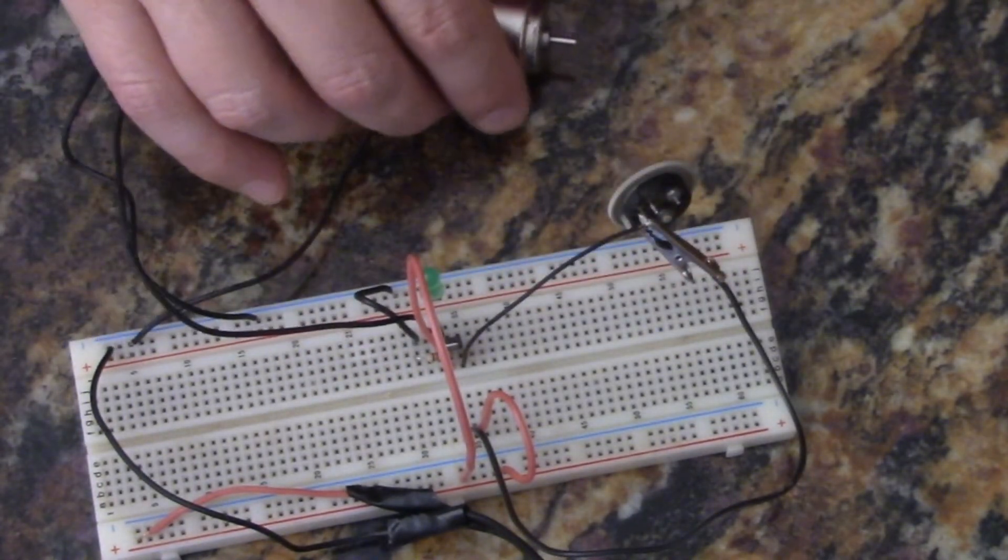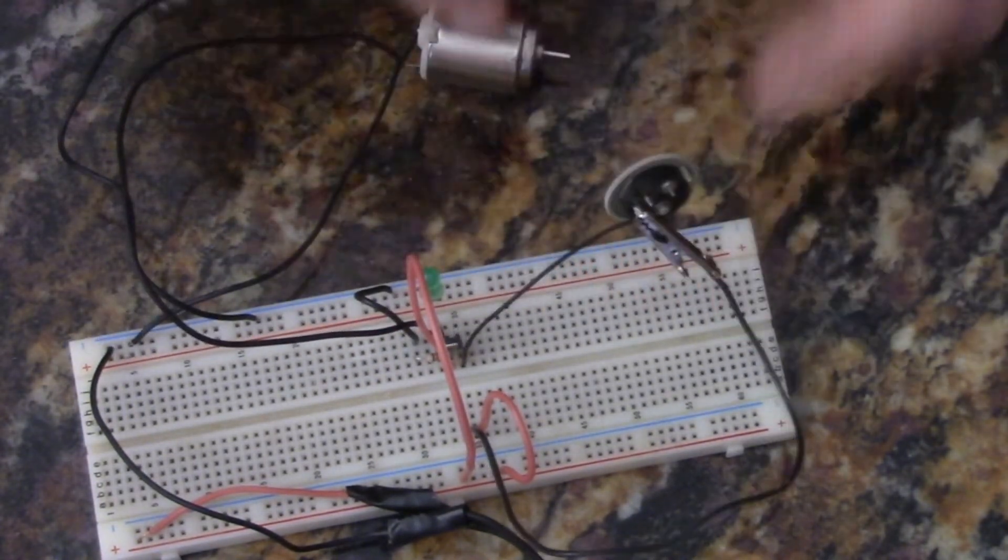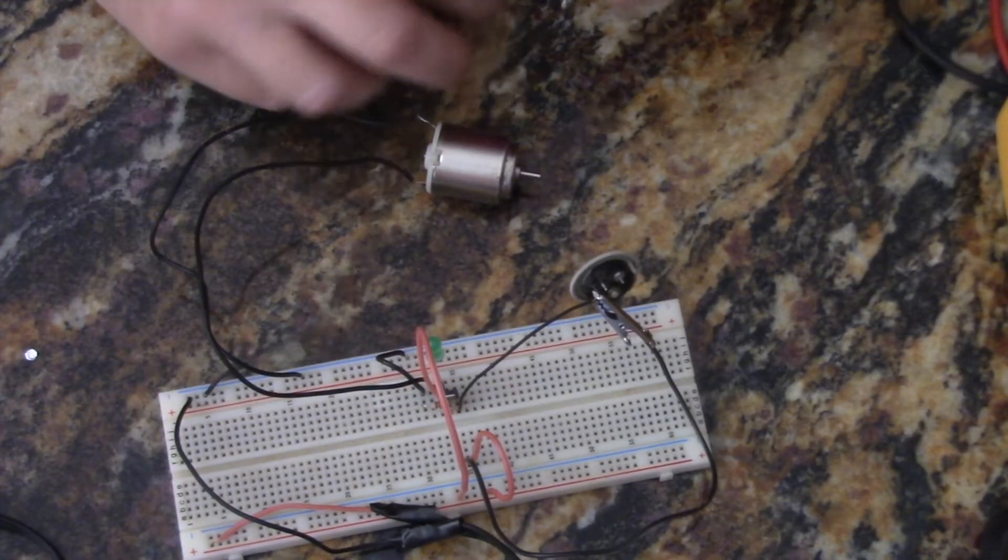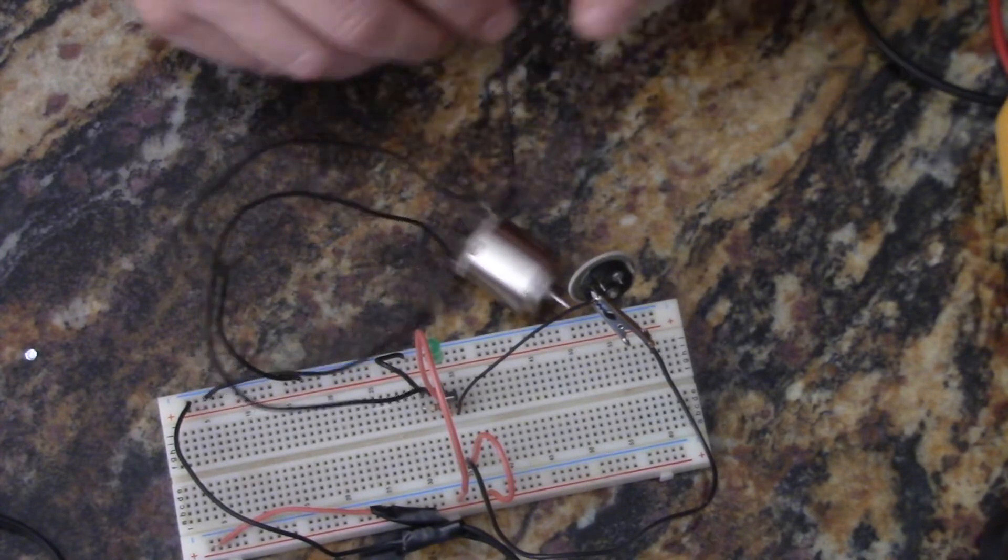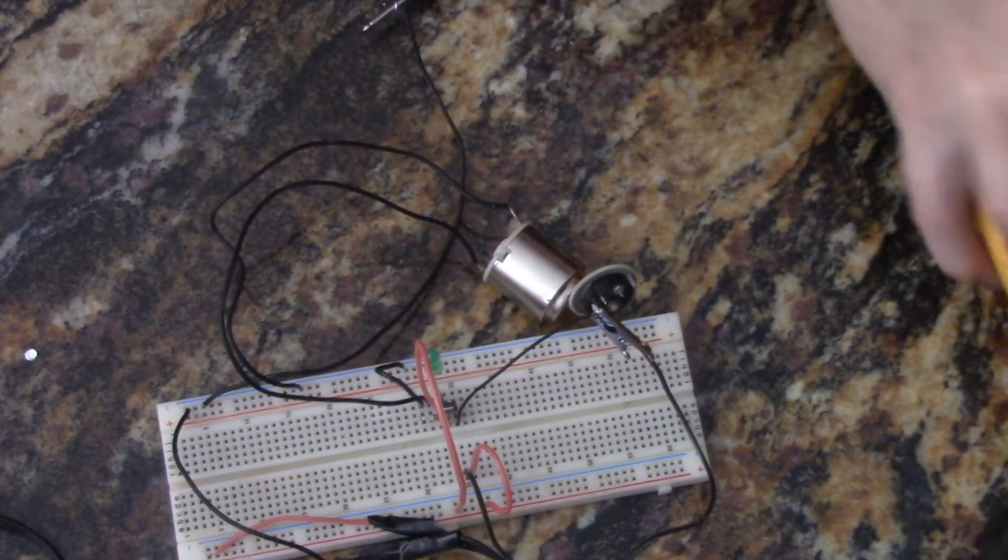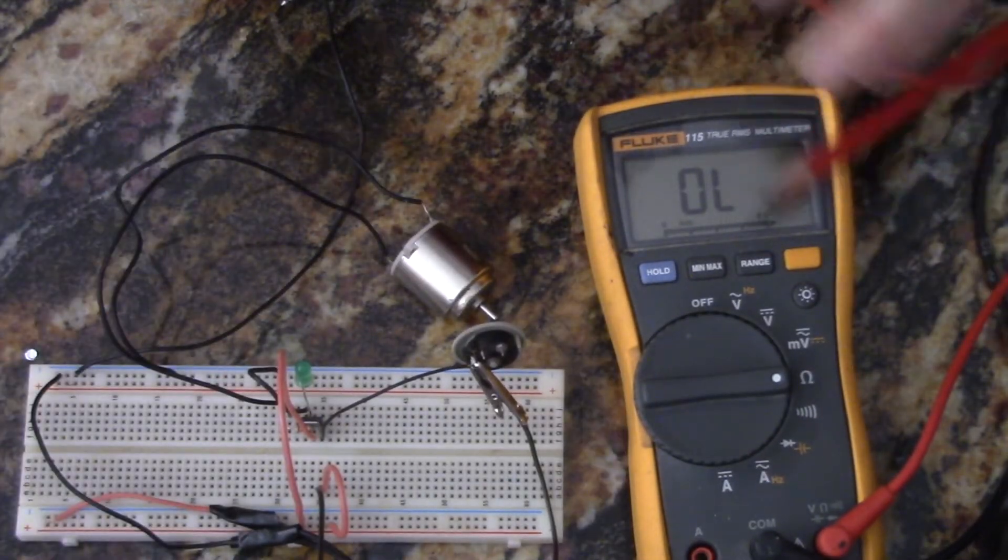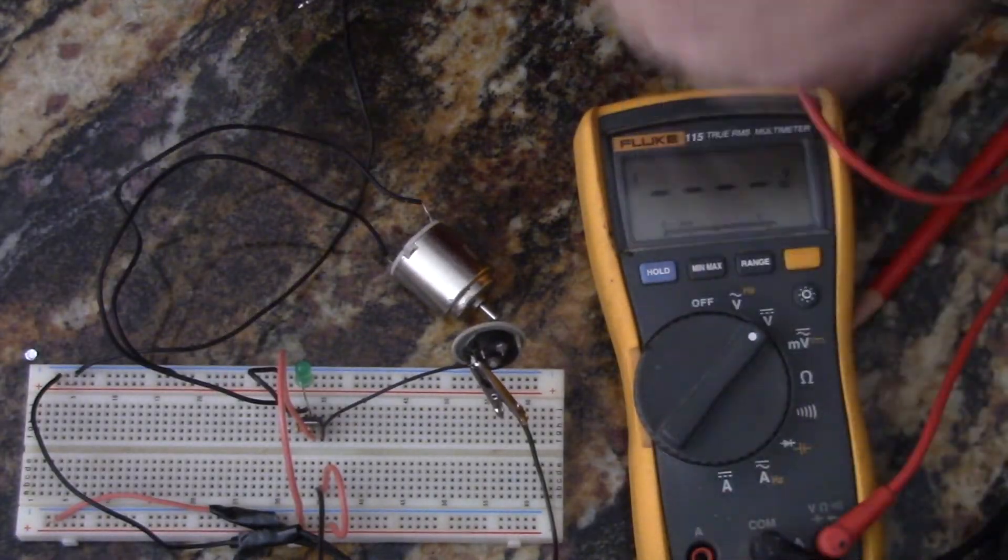So now we can check the voltage. Let's shut this off. We'll check the voltage. So I've got a little lead here going to the ground. And I'll put this over here so that it's in the camera view.